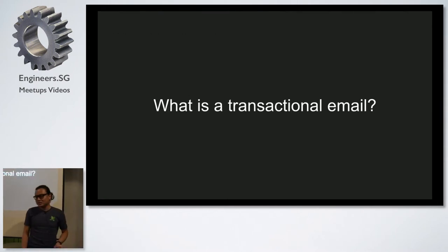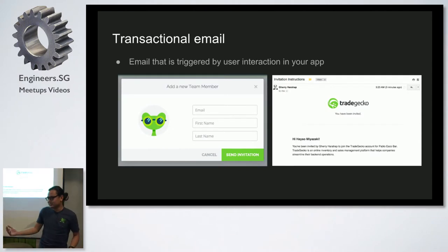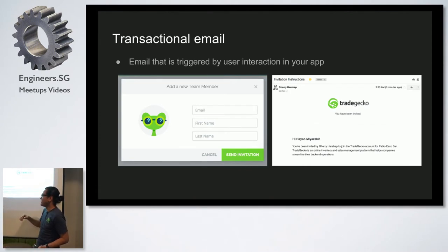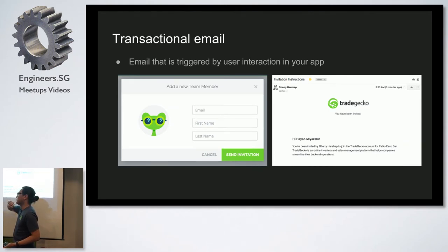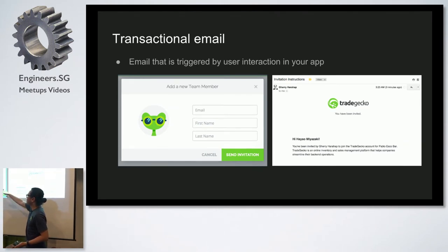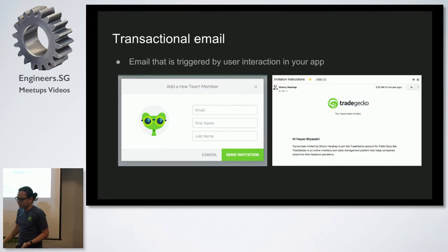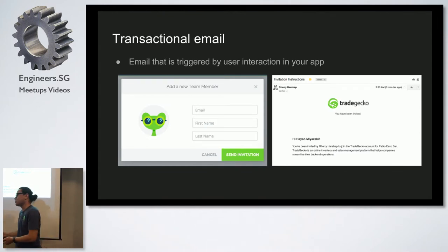Just to start off — what is a transactional email? One simple example: someone registers to your app and wants to invite somebody else. So they add a team member and your app sends an invitation email. Basically, transactional emails are emails that are triggered by user interaction in the app.